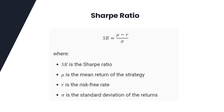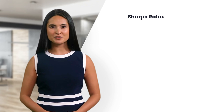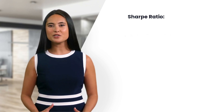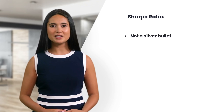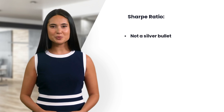Before diving into the Probabilistic Sharpe Ratio, let's quickly recap the Sharpe Ratio itself. It's a measure of risk-adjusted return, calculated as the average return in excess of the risk-free rate divided by the standard deviation of those returns. The higher the Sharpe Ratio, the better the performance of the strategy relative to its risk.